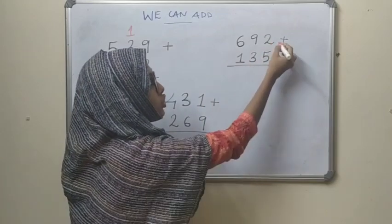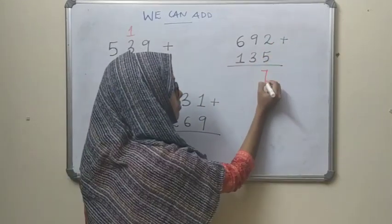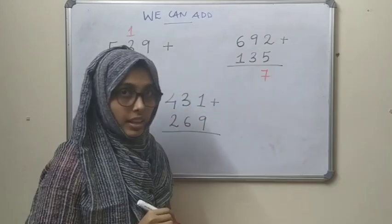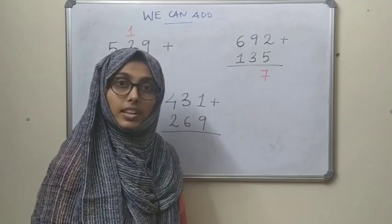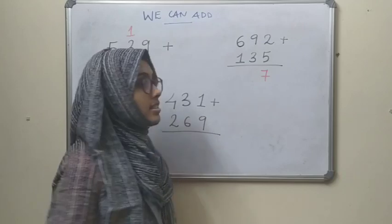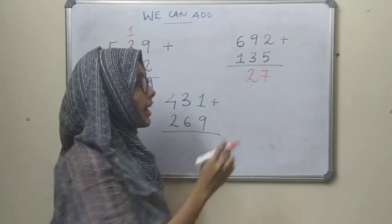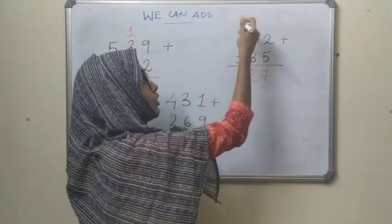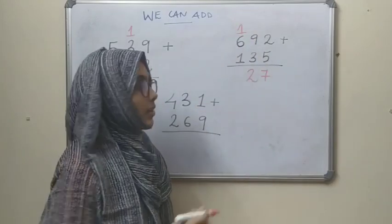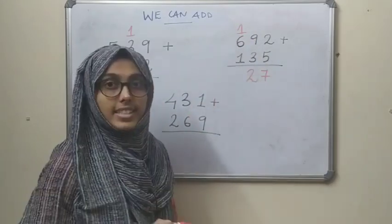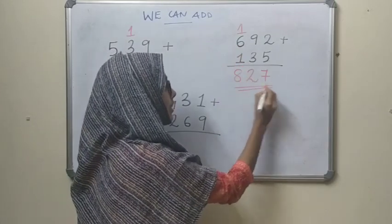Second type: 2 plus 5 is 7. Now 9 plus 3 is 12 — write 2 here and carry 1. Then 6 plus 1 is 7, and 7 plus 1 is 8. The answer is 827.